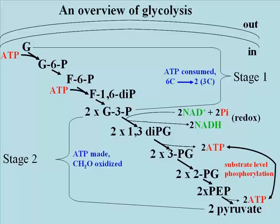To summarize stage 2: there has been a redox reaction — in fact an oxidation of carbohydrate — and a synthesis of two molecules of ATP, with each reaction occurring twice per starting molecule of glucose.